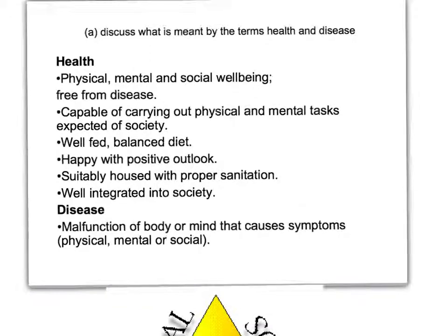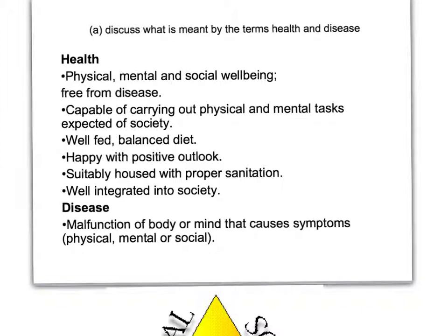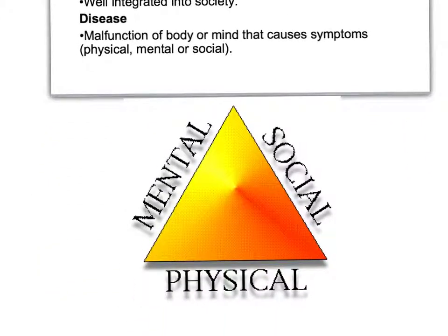Dealing with the term health first of all, we often talk about the health triangle. To be healthy you have to have mental well-being, social well-being, and physical well-being. Health is a term that everyday uses of English will give you an image of, but in terms of biology and medicine it has a specific definition involving mental, social, and physical well-being.